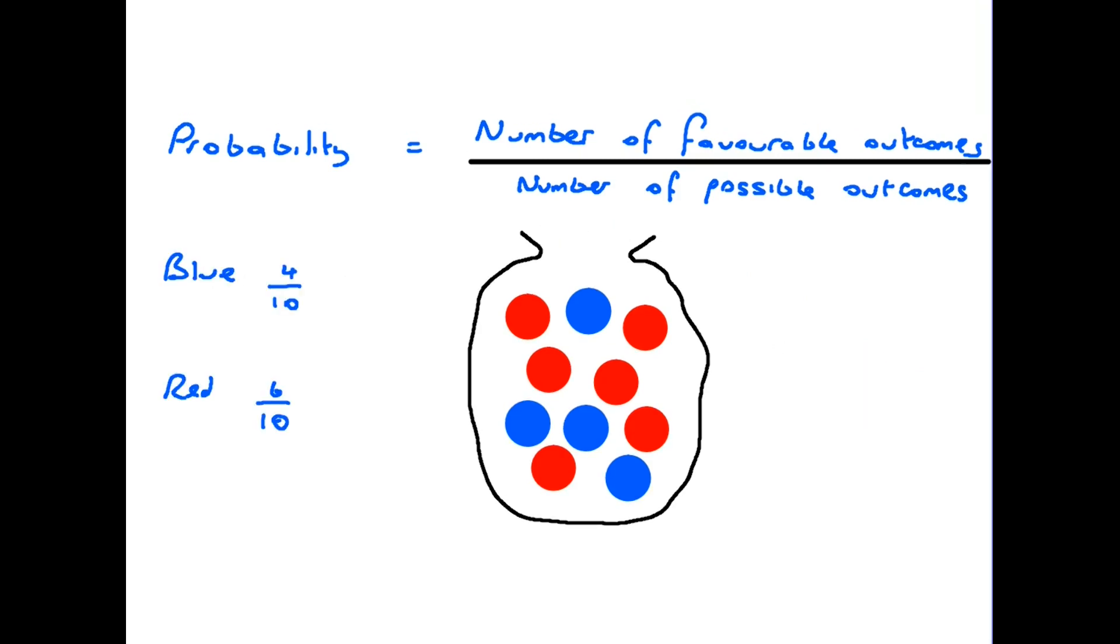Staying with the counters in the bag for just a moment longer. I've rewritten the original probabilities that we had. What is worth noticing is that if we take those two probabilities the six out of ten and the four out of ten and add them together we get one. And that is because when you put your hand in the bag you are definitely going to draw out a counter of one colour or another. You will get a red or a blue. There are no other colours in there so it is definite. The probability is one. And in a situation like this if you do add all the probabilities together all the possible outcomes you will always get one.